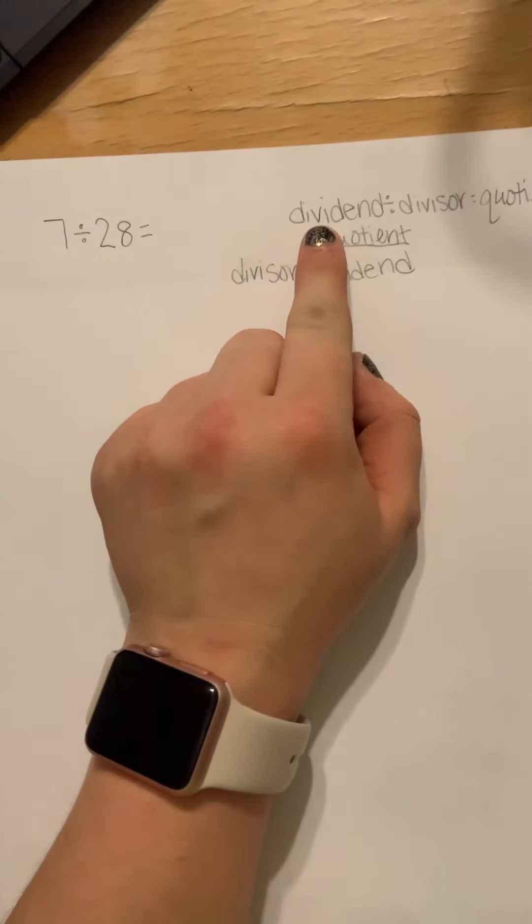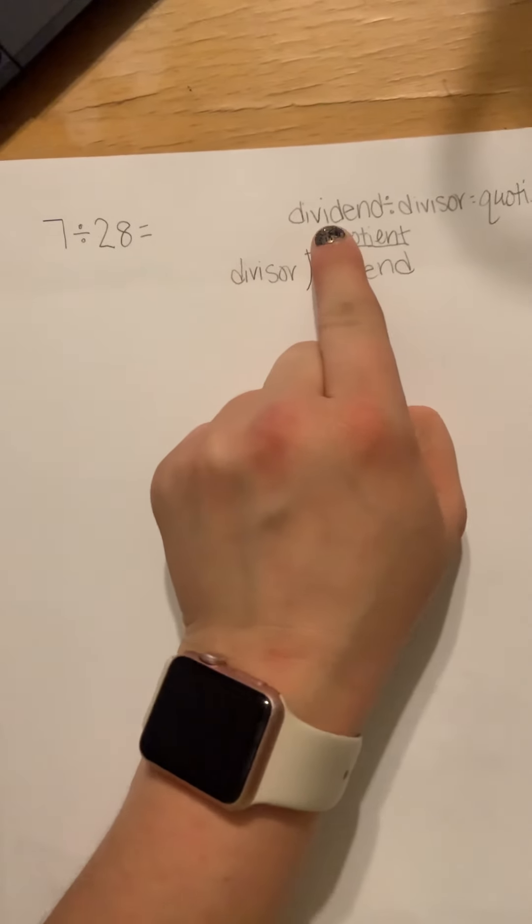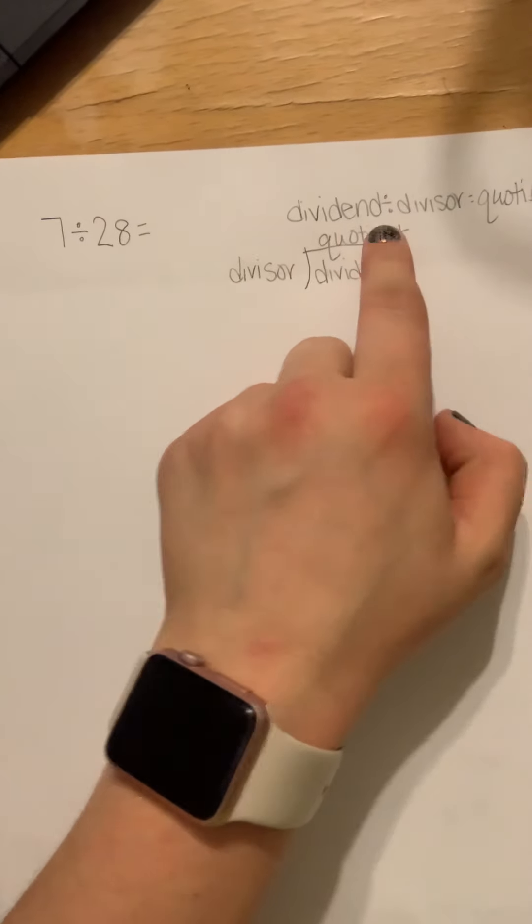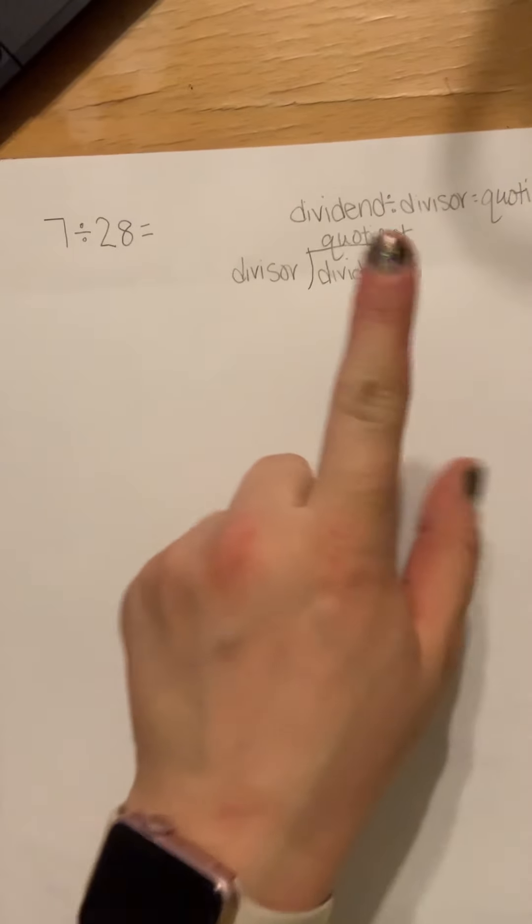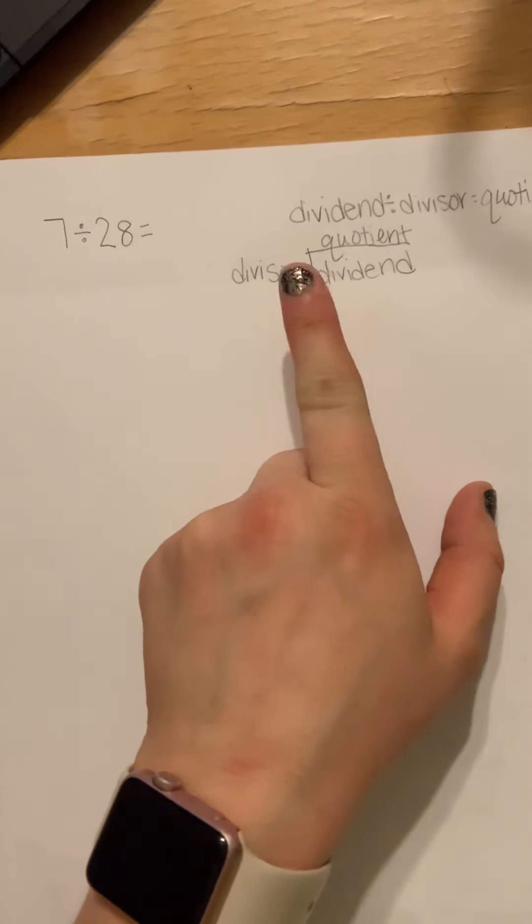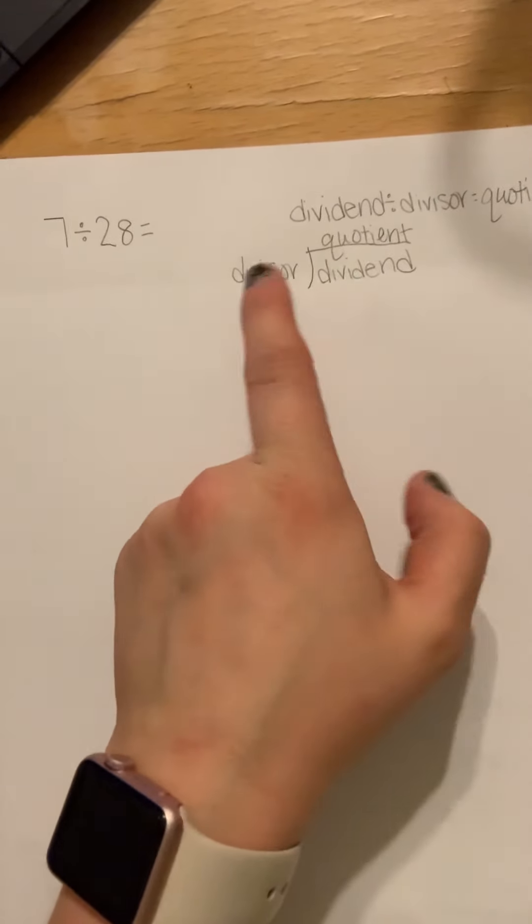If you look right here you're going to take the first number that's going to be your dividend. Your second would be your divisor and your last would be the quotient. When you set it up with the division bar we have dividend underneath, divisor to the left, quotient right on top.